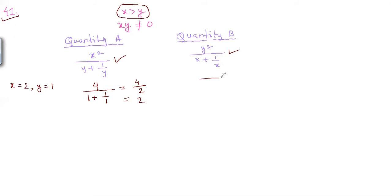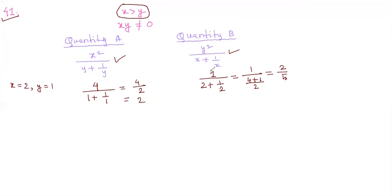Now for quantity B with y equals 1: y squared is 1, and x plus 1 over x is 2 plus 1 over 2. Making a common denominator gives 5 over 2, so quantity B equals 1 times 2 over 5, which is 2 over 5. Since 2 is greater than 2 over 5, quantity A is greater than quantity B.